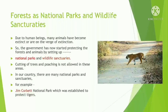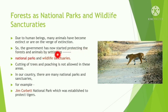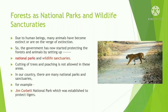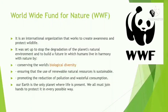The government has created national parks and wildlife sanctuaries to protect animals, because many animals have become extinct or are on the verge of extinction due to human activities. Cutting of trees and poaching is not allowed in these areas. For example, Jim Corbett National Park was established to protect tigers and is named after the famous British hunter and naturalist Jim Corbett.